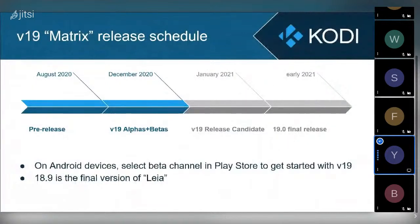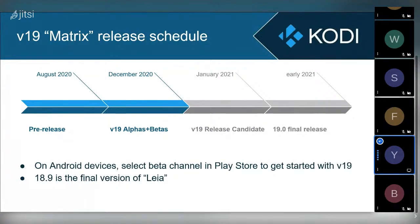As you could probably guess, the codename is Matrix — because we like to name all Kodi releases after well-known movies, TV shows, or characters. We have a community poll for every release. This one is Matrix, the last one was v18 'Leia', and the next one is not yet determined.